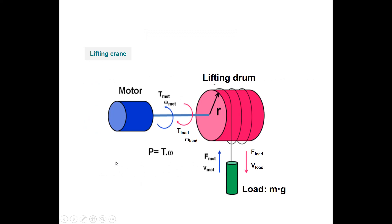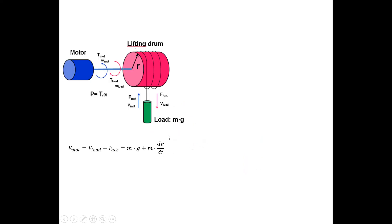In this example, we have a motor which drives a lifting drum, and connected to that lifting drum we have a load. The force acting on that load is m times g, where g is the gravitational acceleration. We have a load force and a load speed, and that load force becomes a load torque, while the load speed is transformed to an angular velocity. When we want to move that load, the motor force equals the load force plus the acceleration force: F motor equals m times g plus m times a, where a is the derivative of the speed, dv/dt.